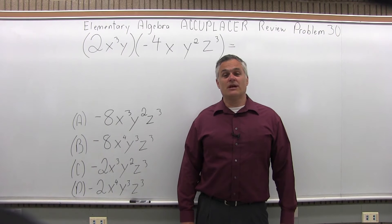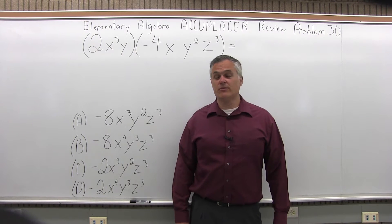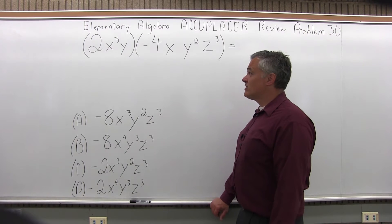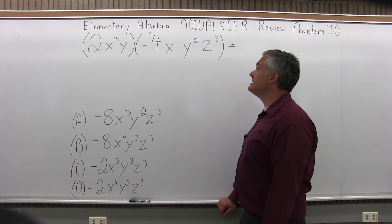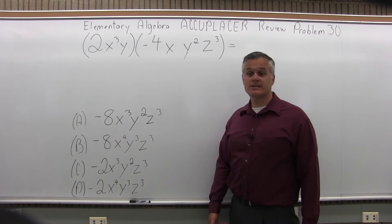This is the Elementary Algebra Accuplacer Review, Problem 30. We have (2x³y)(-4xy²z³) in parentheses and we want to simplify that.